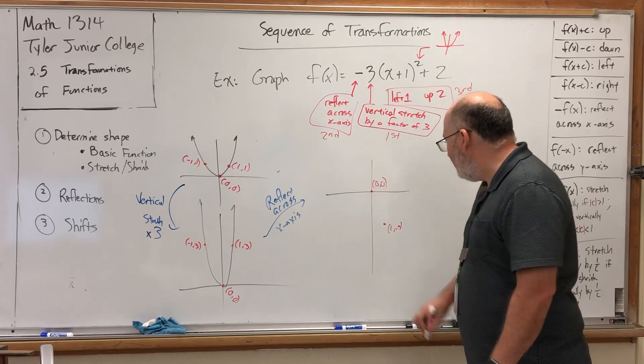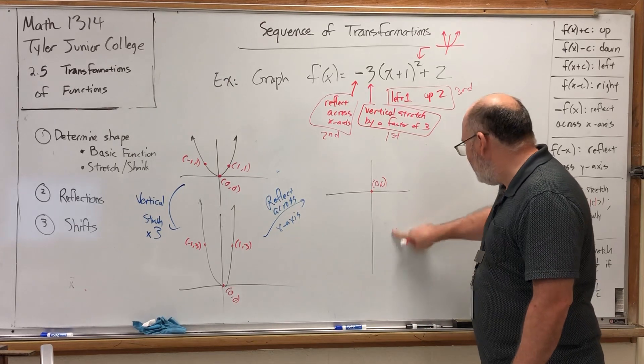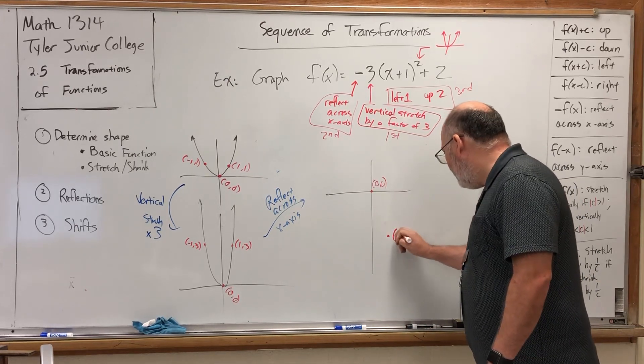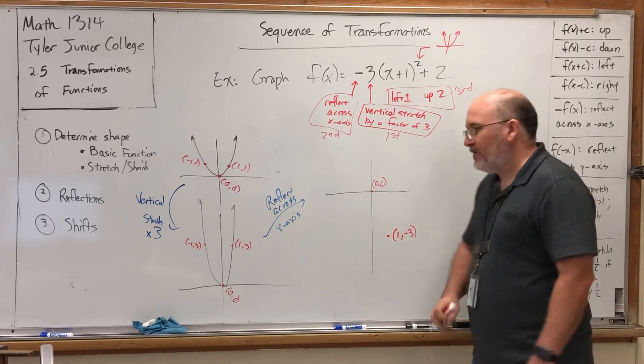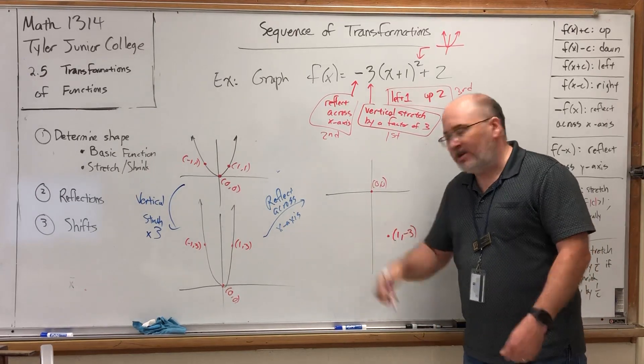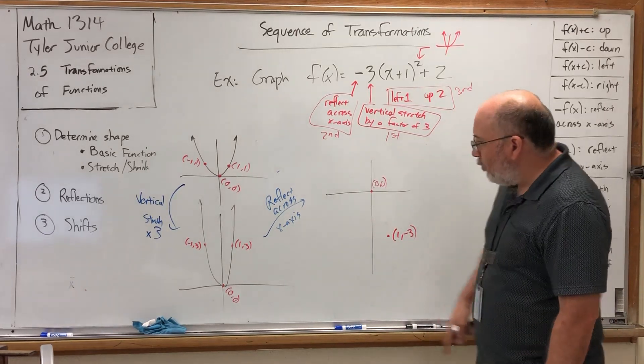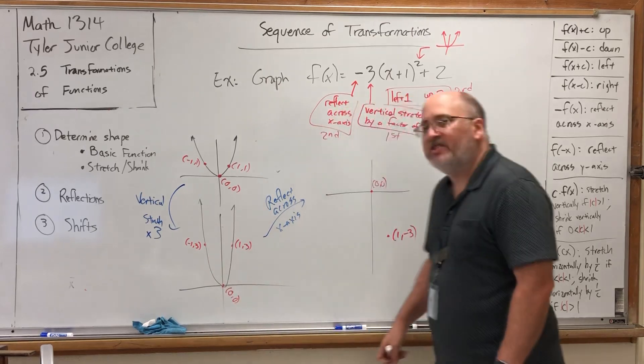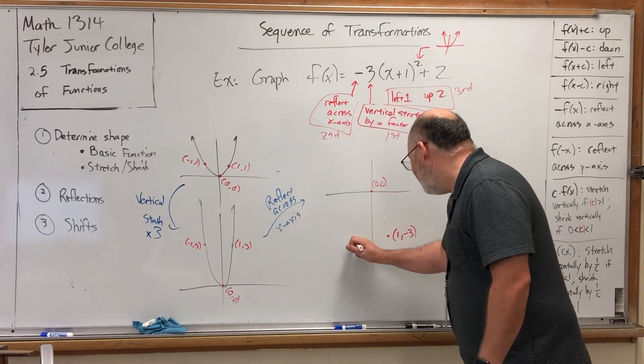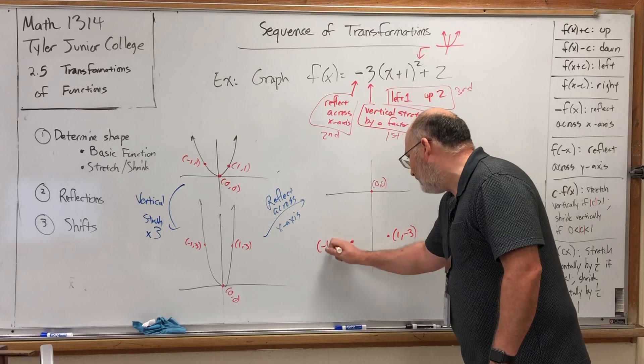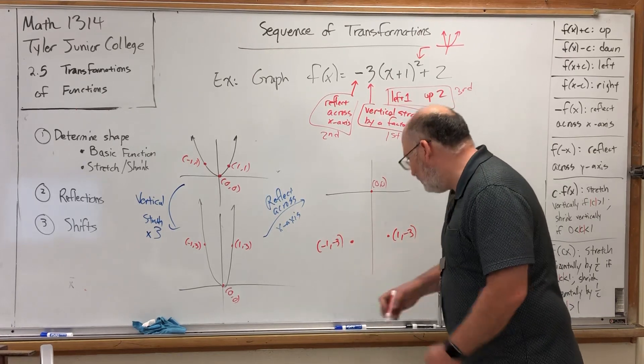If we reflect the point 1 comma 3 across the x-axis, it lands at the point 1 comma negative 3. 0, 0 is still there. Let's move that a little bit lower. Of course, you can draw this more accurately, especially if you had graph paper that was already lined. And then the point negative 1 comma 3 when reflected across the x-axis will reflect down to the point negative 1 comma negative 3. So connect those dots.